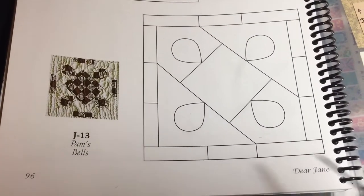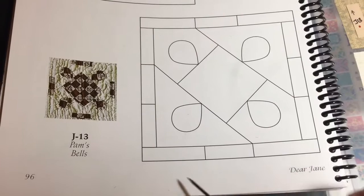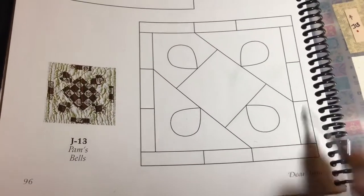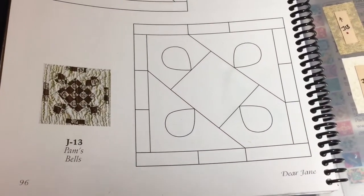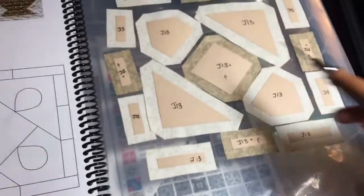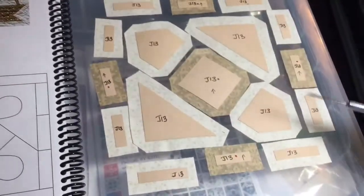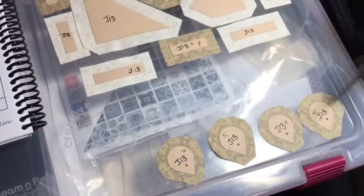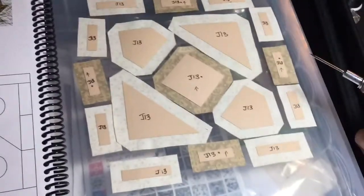Now we are on the final block of the J row, J13. J13 is not a modified block, so we're going to work directly from the book. And we have all the pieces over here. These are all of the assembly pieces to be stitched together, and then I've got the four applique teardrops down on the bottom here.